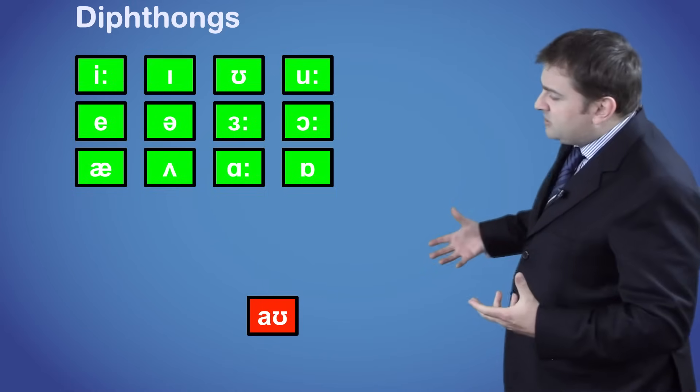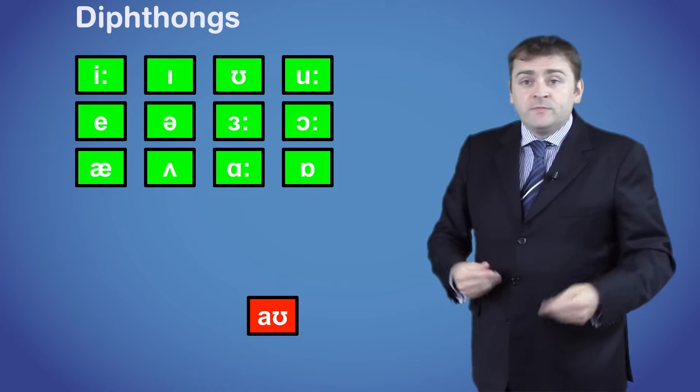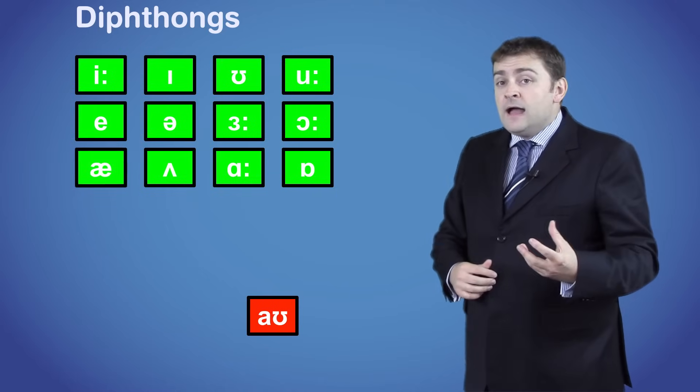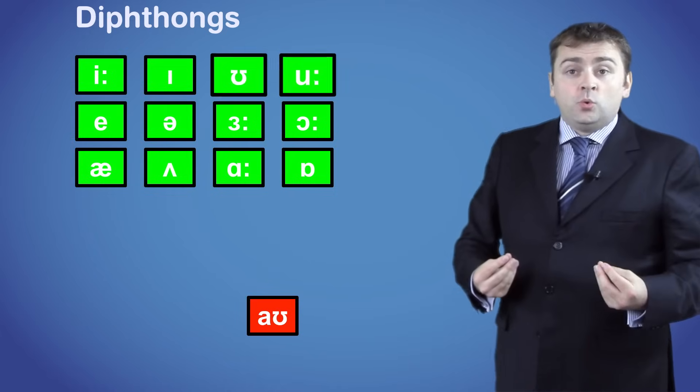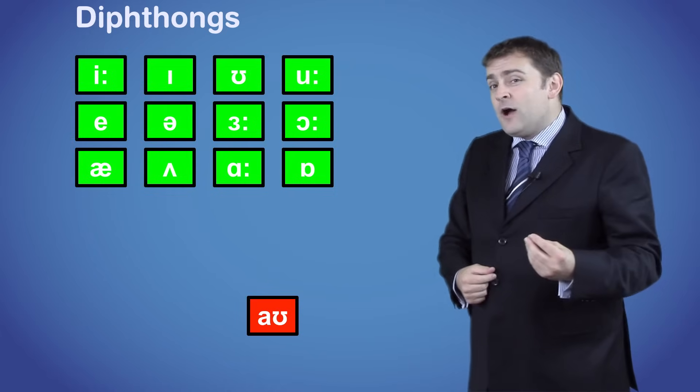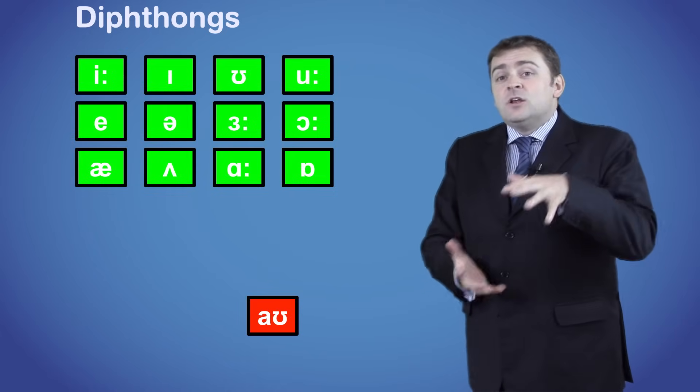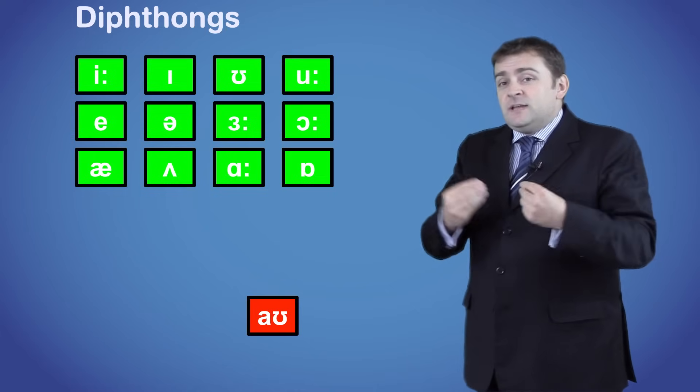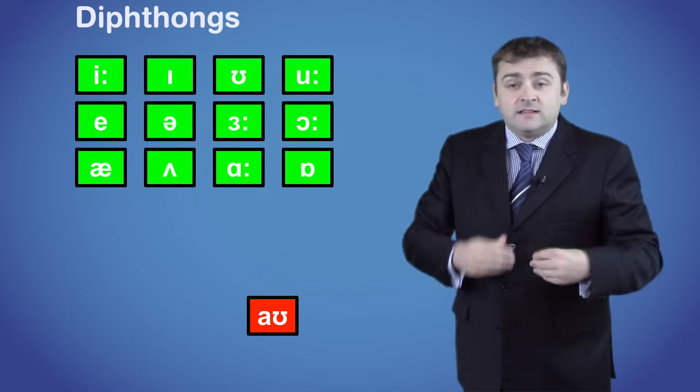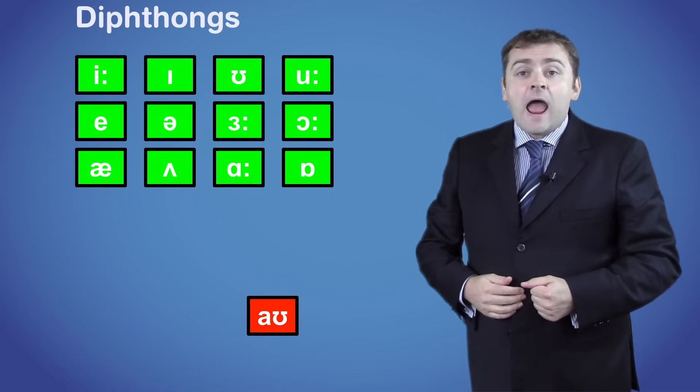The next sound is OW. This is a combination of A and U or OO. Now our mouth is closing and the shape of the lips is changing at the same time, rounding a little as we say the sound. OW.